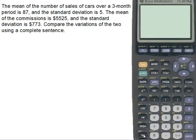We're looking at the mean number of sales of cars over a three month period, it's 87, and the standard deviation is 5.